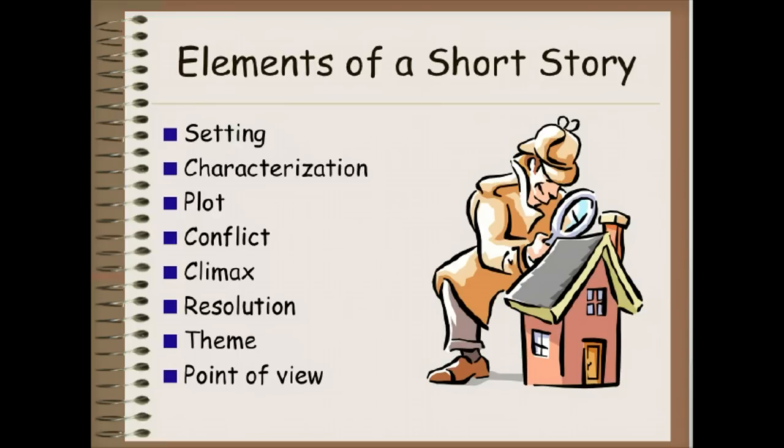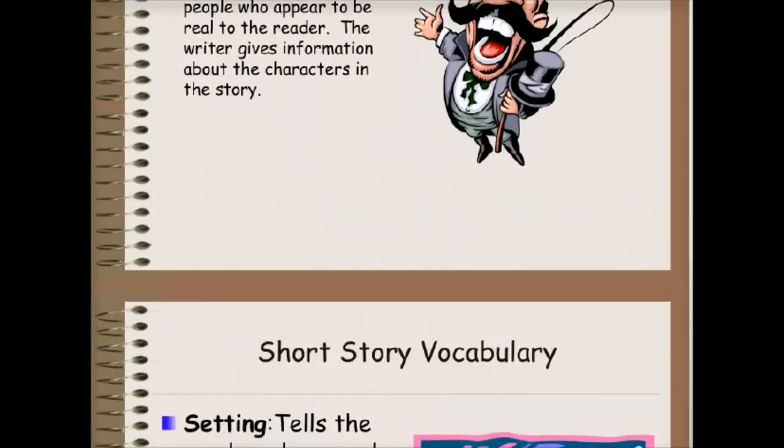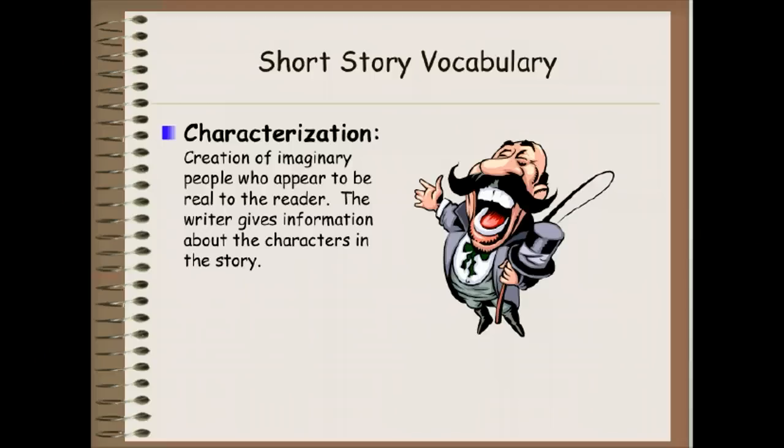We'll begin with a definition of the setting. Setting tells the reader where and when the story takes place. Next is characterization. It's the creation of imaginary people who appear to be real to the reader. The writer gives information about the characters in the story.